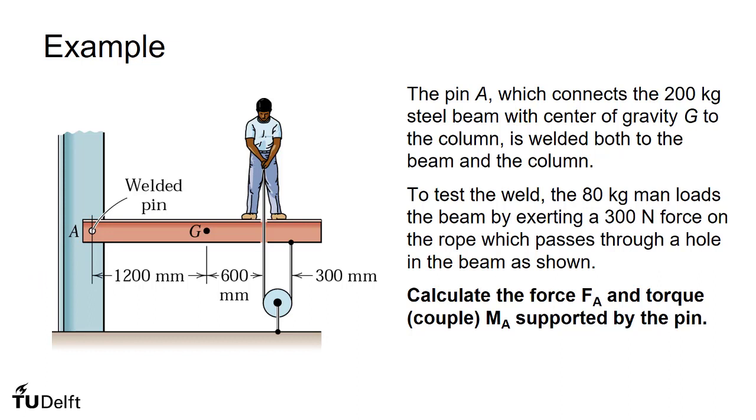We're going to analyze this system by first making a free body diagram. We'll cut the beam here, free it from this support, and we'll have to put the reactions of the welded pin there. We're going to cut here through the rope at the bottom.